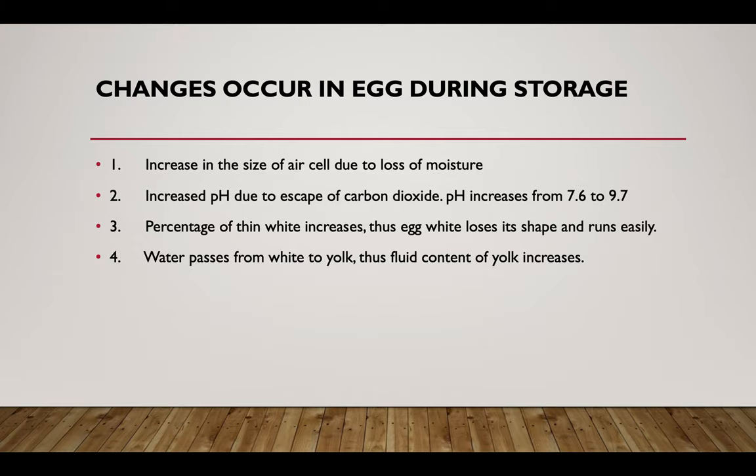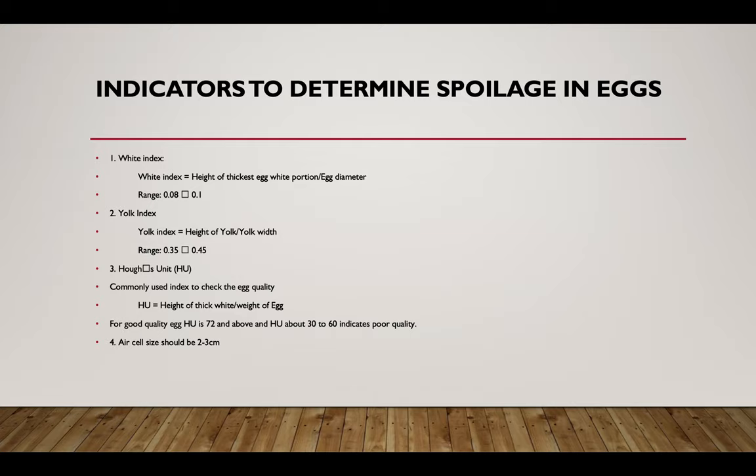Changes occur in eggs during storage: the size of the air cell increases due to loss of moisture; pH increases due to escape of carbon dioxide, and may rise from 7.6 to 9.7; the percentage of thin white increases, so the egg loses its shape and runs easily; and water passes from white to yolk, increasing the fluid content of the yolk. Indicators to determine egg spoilage include the white index — height of the thick egg white portion divided by egg diameter — which usually ranges from 0.08 to 0.1. The yolk index is height of yolk divided by yolk width.